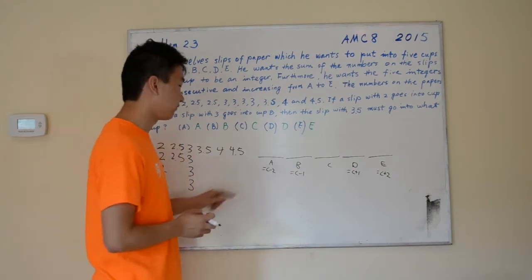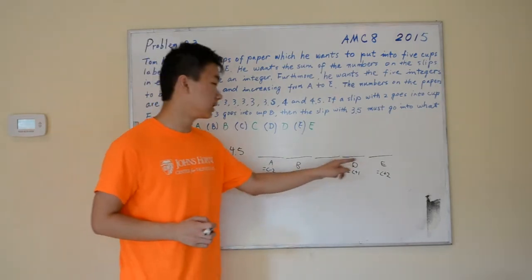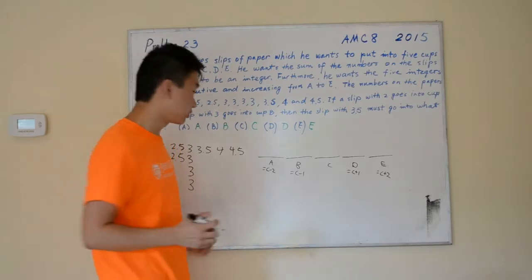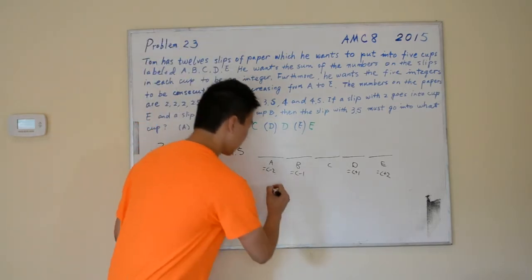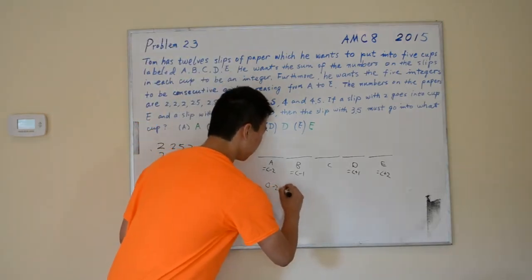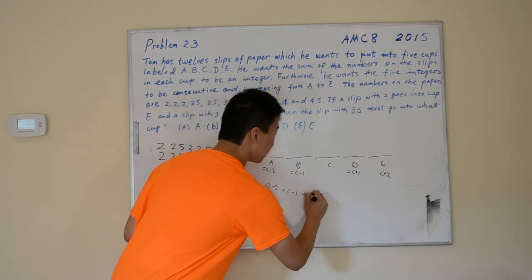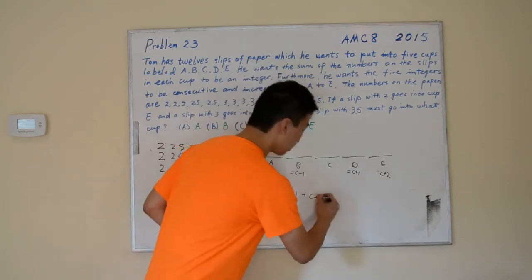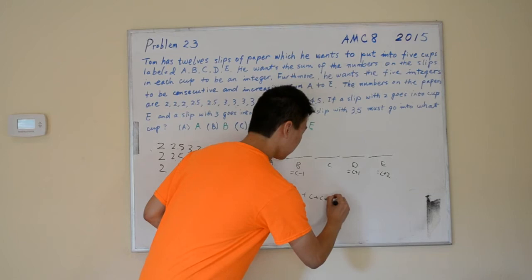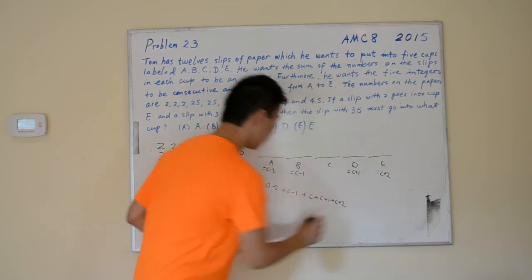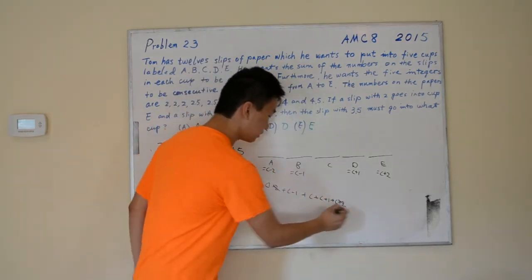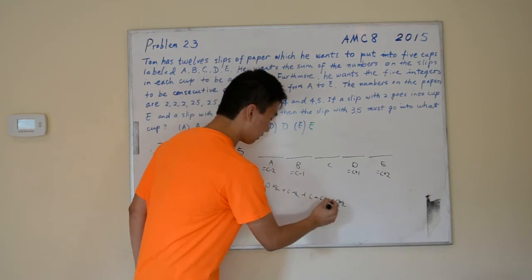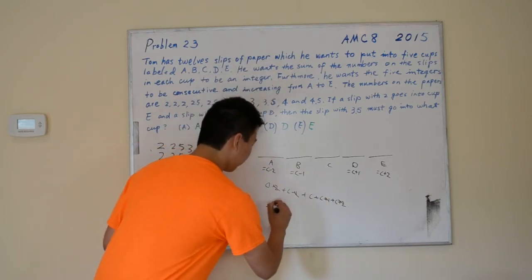Let's find the sum of A, B, C, D, and E. The sum should equal C minus 2 plus C minus 1 plus C plus C plus 1 plus C plus 2. These 2's cancel out, these 1's cancel out, and we're left with 5C.